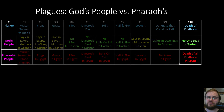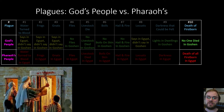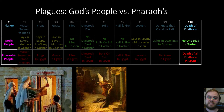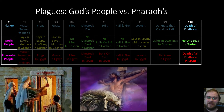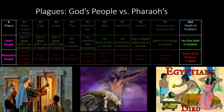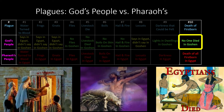Plague number ten is the death of the firstborn, known as the Passover. The Israelites in Goshen had to kill a lamb and spread its blood over the doorpost, and the death angel would pass over that house. That's a picture of what Jesus did on the cross — he is the Lamb of God, slain for our sins. The people of Egypt were not covered by the blood of the lamb, a picture of someone who rejects Jesus. All their firstborn died in Egypt, but not one person died in Goshen.